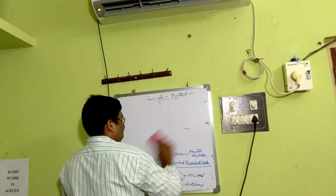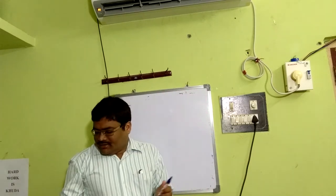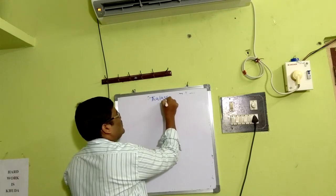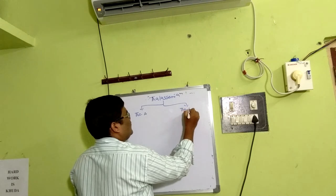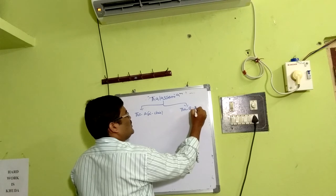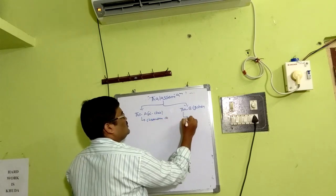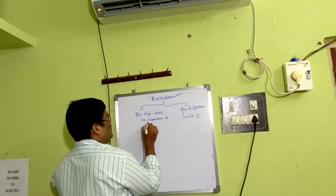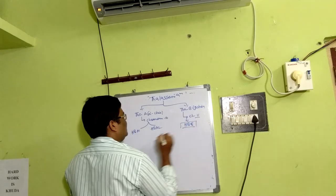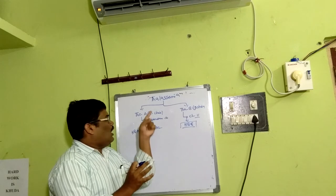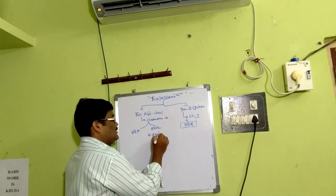Thalassemia, the last Mendelian disorder in this category, is again of two kinds: thalassemia alpha (alpha chain) and thalassemia beta (beta chain). Thalassemia alpha is associated with chromosome 16, and thalassemia beta is associated with chromosome 11. In thalassemia alpha, there are two pairs — four alleles in total: HbA1 and HbA2 on chromosome 16. Thalassemia beta involves just a single gene HbB on chromosome 11.